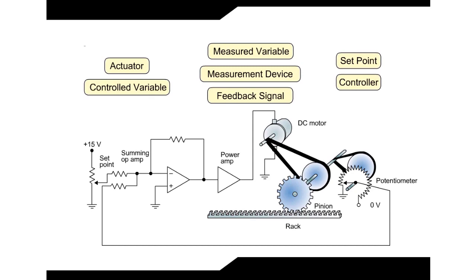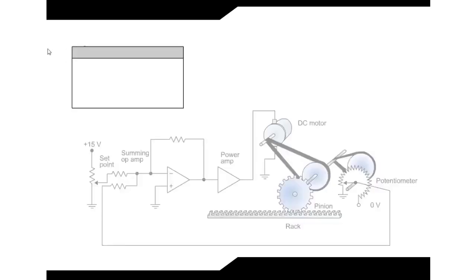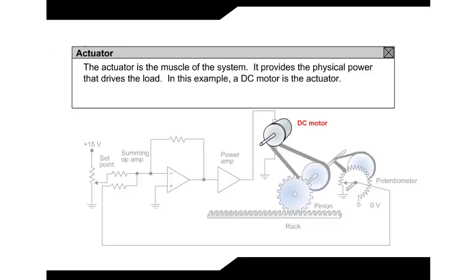Let's read about the elements of the Analog Closed Loop Position Servo System. Actuator: The actuator is the muscle of the system. It provides the physical power that drives the load. In this example, a DC motor is the actuator.